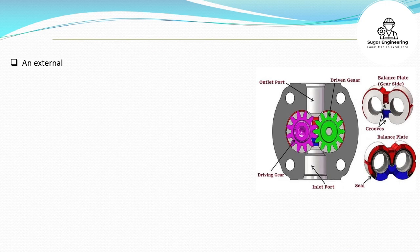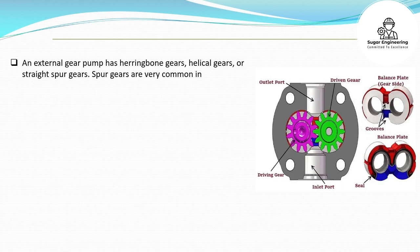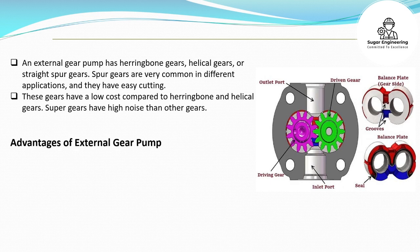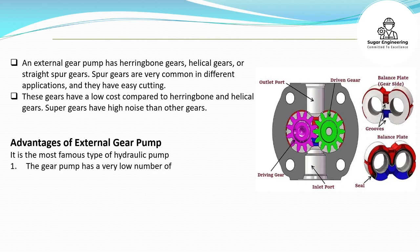An external gear pump can have herringbone gears, helical gears, or straight spur gears. Spur gears are very common in different applications and they have easy cutting. These gears have a low cost compared to herringbone and helical gears. However, spur gears have higher noise than other gears.